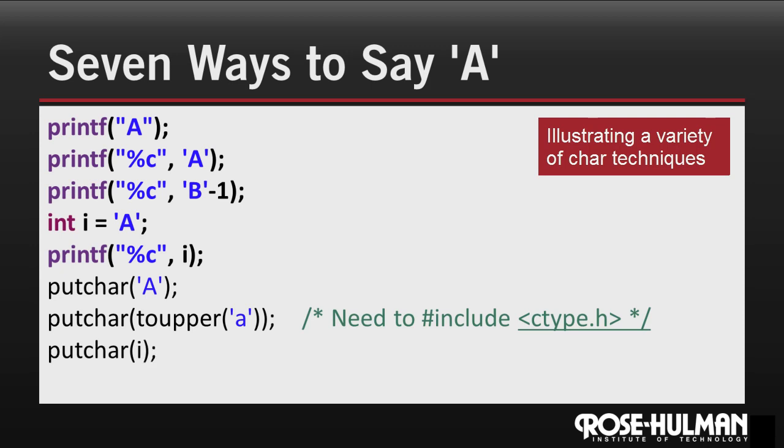We can also use putchar with int types. So we can take our int variable i and use putchar to display its value as a character, and we'll get an A also.